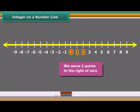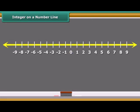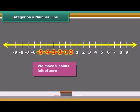Here to mark plus 2 on the number line, we move two points to the right of zero. Similarly, to represent minus 5, we move five points left of zero.